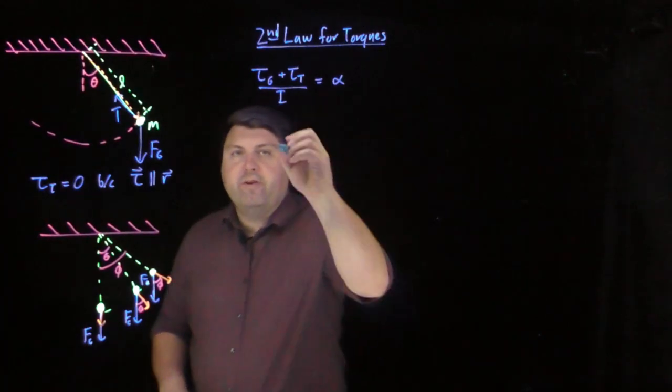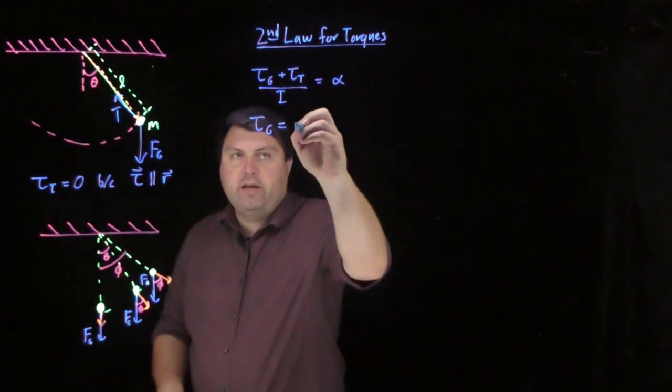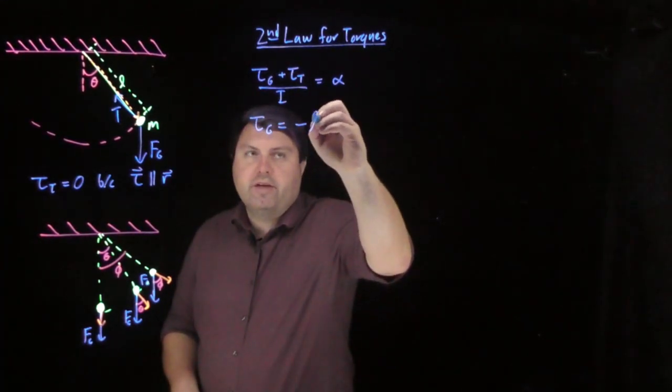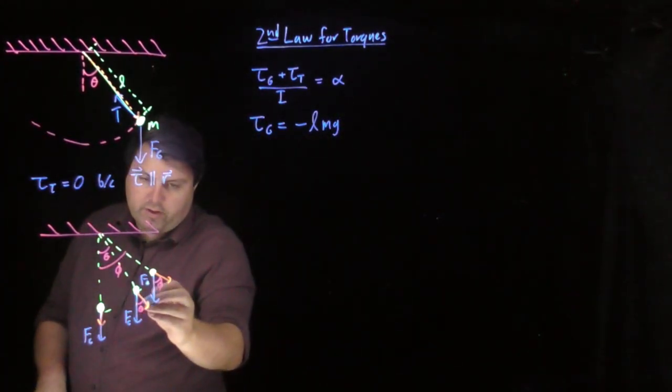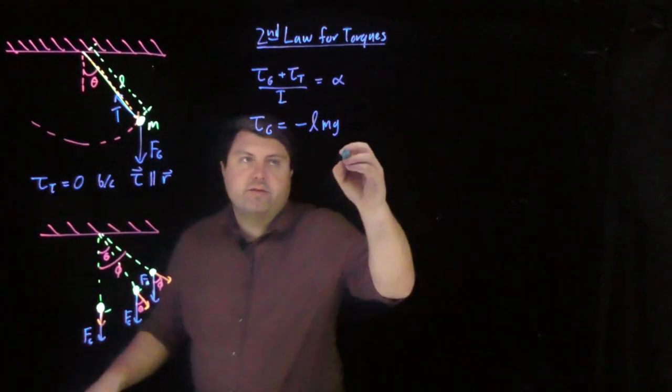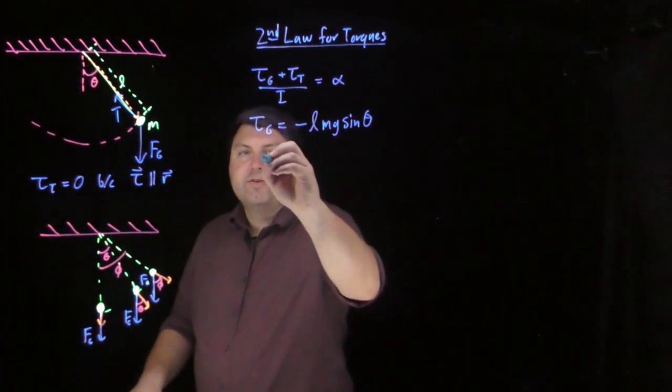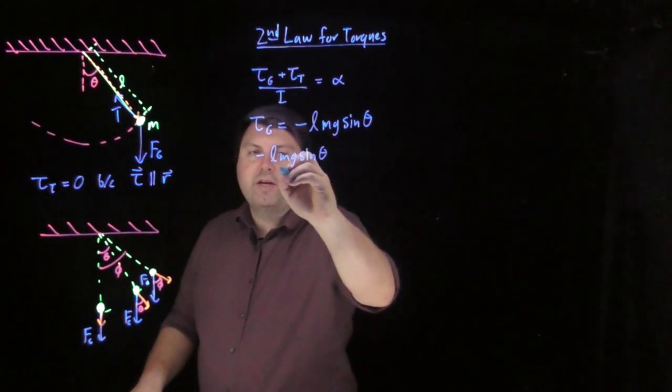So our torque from gravity is going to be negative, because we found from right-hand rule. Then R, which is L. And then the force of gravity, mg. And then the angle between these two, which is whatever our angle is, so sine of theta. So now we have negative L, mg, sine theta.